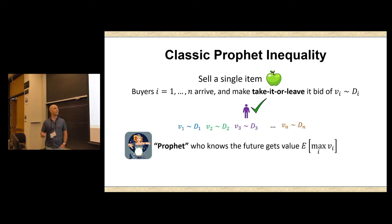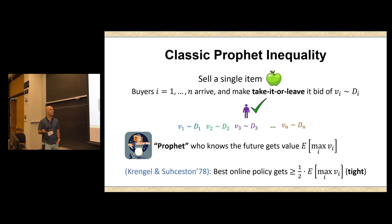So had you known the future, if you were a prophet who knows the outcome of these random coin tosses ahead of time, you would have gotten the expected max value. But unfortunately, you are not such a prophetic being. So instead, you have to use some kind of online policy. And the classic result of Krengel and Sucheston over four decades ago asserts that there exists some online policy that will give you one half of the value that the prophet gets you. This is the prophet inequality. By the way, this one half is tight.